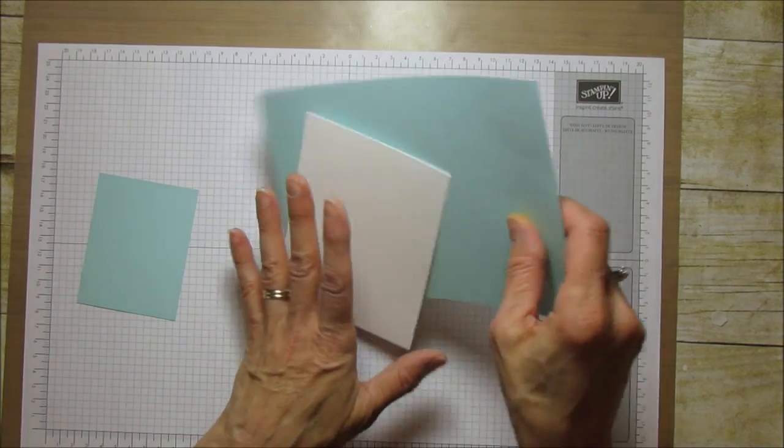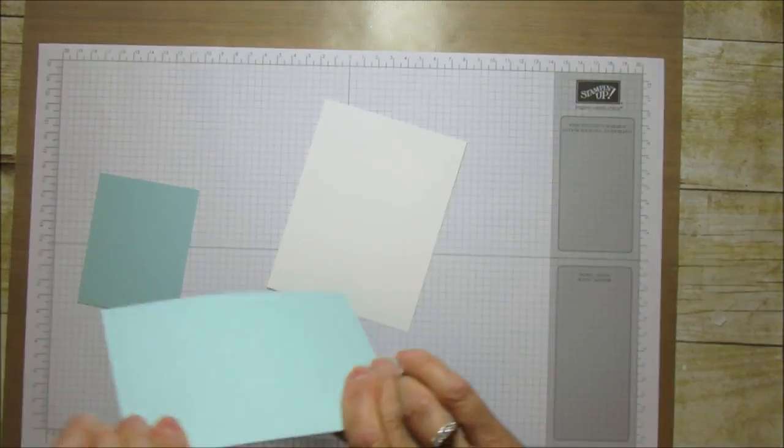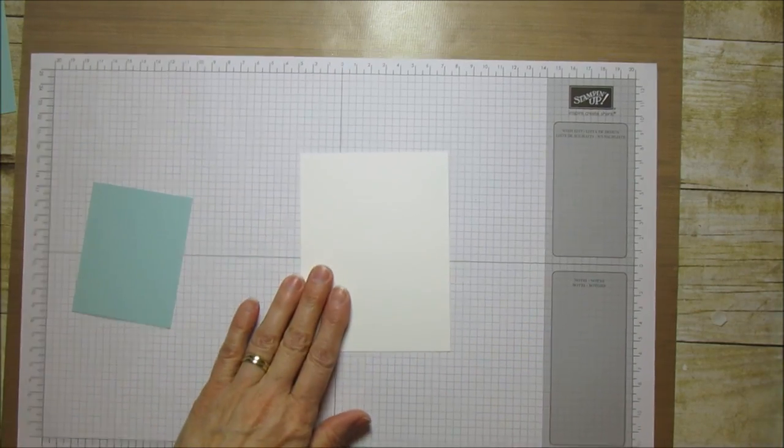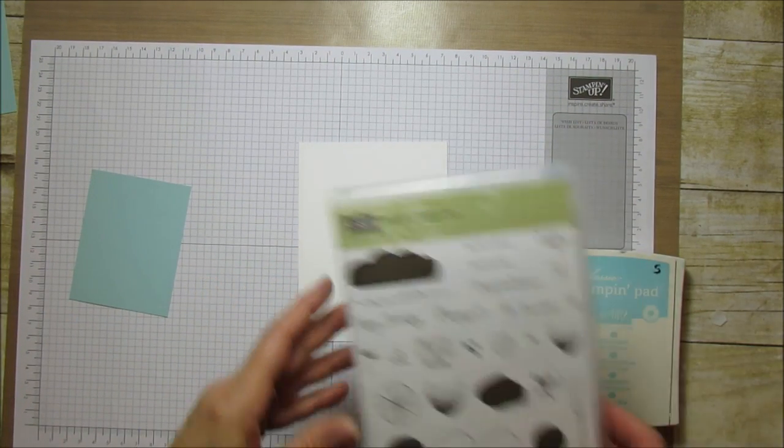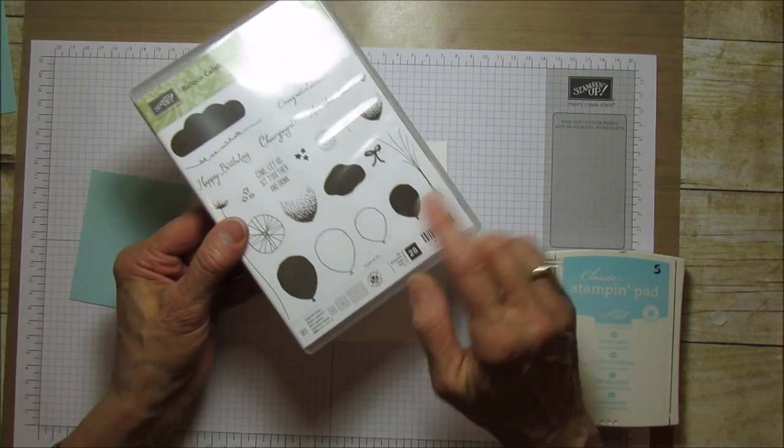Let me go ahead and fold our base in half. I'm going to grab some Pool Party and the stamps that we're using for this is in our Occasions catalog and it's this Balloon Celebration.